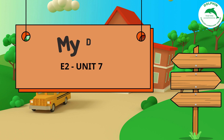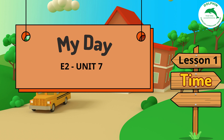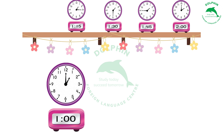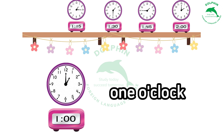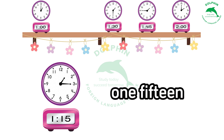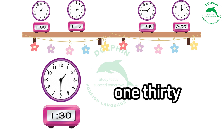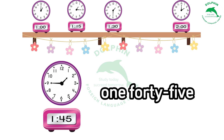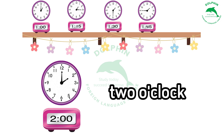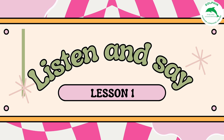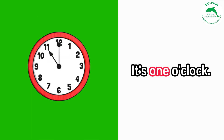Unit 7: My Day, Lesson 1 - Time. Listen, point and say. One: one o'clock. Two: one fifteen. Three: one thirty. Four: one forty-five. Five: two o'clock. Listen and say. One: it's one o'clock.